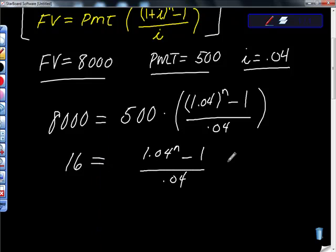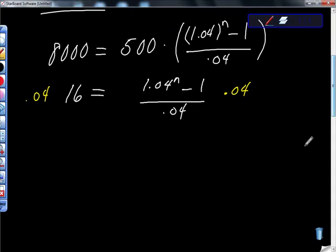And then from here, I'm just going to keep doing my arithmetic. I'm going to multiply both sides by 0.04. 0.04 times 16 gives me 0.64, so 0.64 is equal to 1.04 to the nth power minus 1.